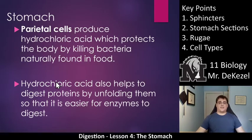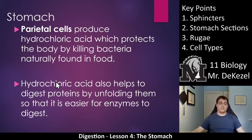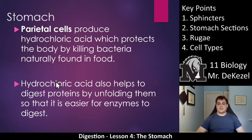Now we're going to get into the types of cells. We've already talked about a few things that are secreted by these cells. Cell type number one are the parietal cells. Parietal cells produce HCL — hydrochloric acid — and these protect the body from bacteria found naturally in food, break down different foods, and turn on enzymes. Hydrochloric acid also helps to digest proteins by unfolding them so that it's easier for enzymes to digest. It is essentially the catalyst that moves things along in the stomach — without it you really wouldn't be able to digest things very well.